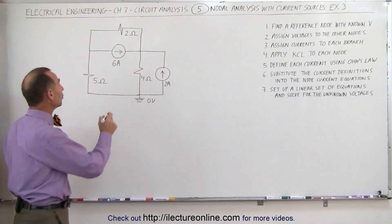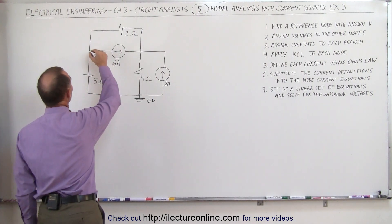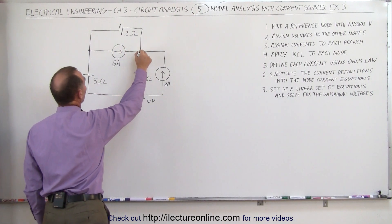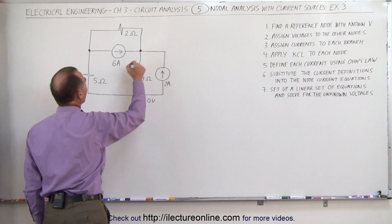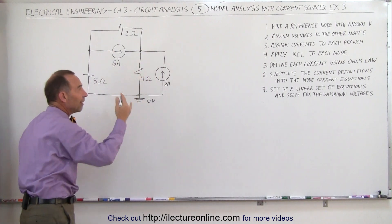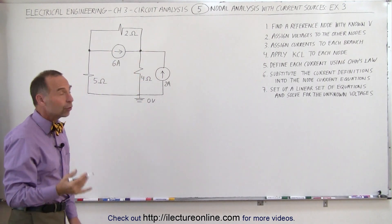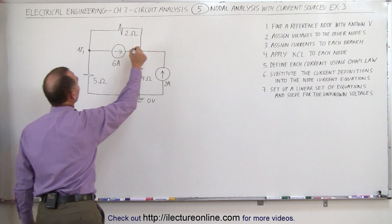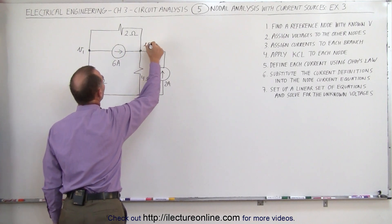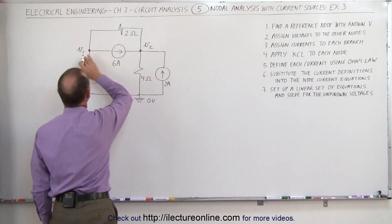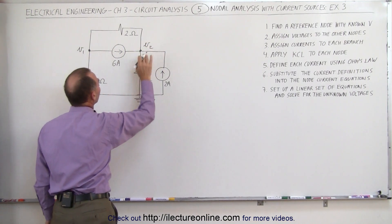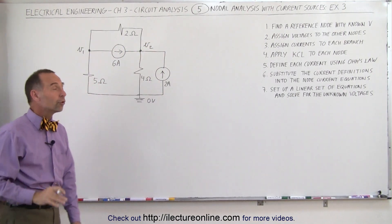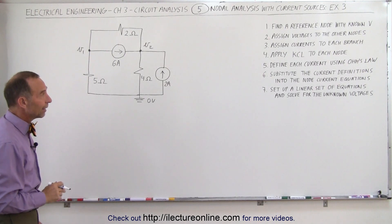We now have two additional nodes — one node over here and one node over here. We're going to assign a value to each of those two nodes. We're going to call this V1 and call this V2, the voltage at this node and the voltage at that node. Those are the two unknowns that we're trying to find.